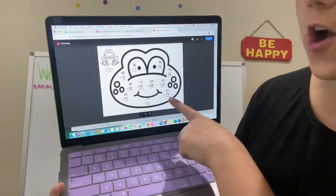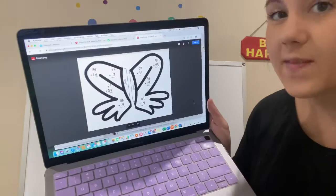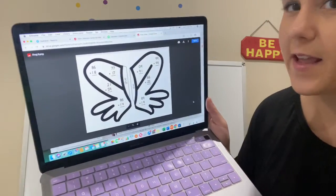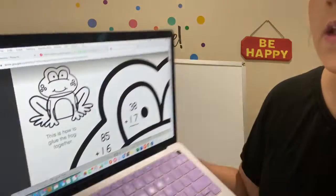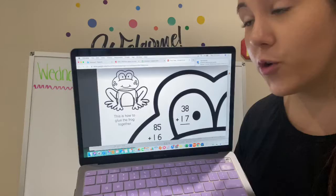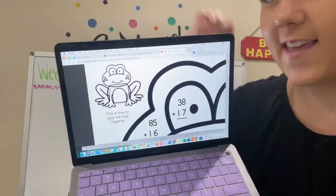Let me show you what you're going to be doing. So here's the frog head, the frog body, and two of the frog legs. The other two are on the other part of the body. And then once you glue it all together, it should look just like this.